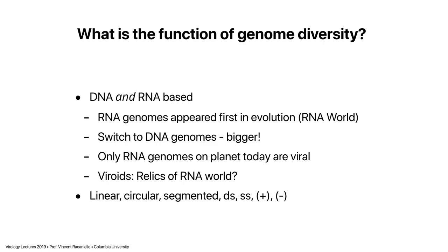Eventually, RNA cells arose, and possibly RNA viruses of those cells. At some point there was a switch to DNA — it didn't happen overnight. An enzyme called reverse transcriptase evolved, which we find today in many viruses and in all of our genomes, that could convert RNA to DNA. That switch allowed cells and viruses to get bigger, because there's a limit to the size RNA can achieve — maybe 100,000 bases — while DNA genomes can be billions of bases in length. DNA is inherently more stable and less mutagenic than RNA.